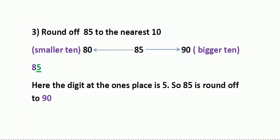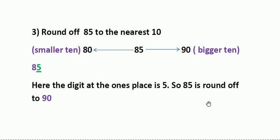Next question: round off 85 to the nearest ten. Step one: 85 lies between 80 and 90. Next, we look at the ones place — here we have 5. If the digit at the ones place is 5 or greater than 5, we round it off to the bigger ten. The digit at the ones place is 5, so 85 is rounded off to 90.